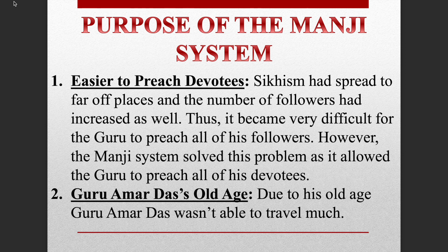Because Guru Amar Das Ji had grown old, it was difficult for him to travel everywhere, and he stayed in Goindwala. Therefore, there was a need to establish a proper system. So Guru Amar Das Ji spread Sikhism across Punjab and India under a logical and well-planned method of administration, and in this system the Manji system was introduced.